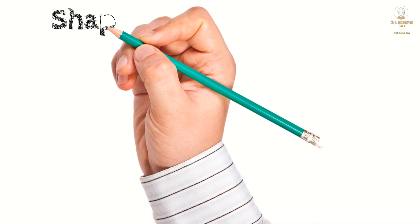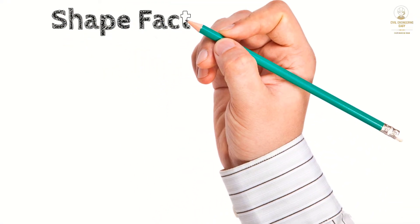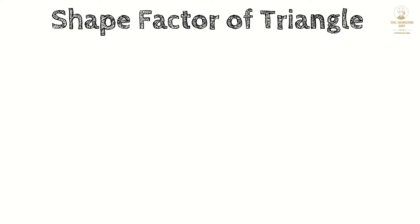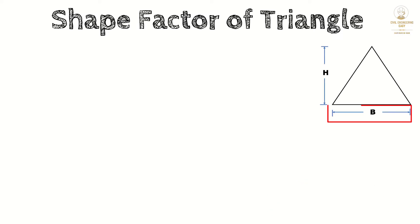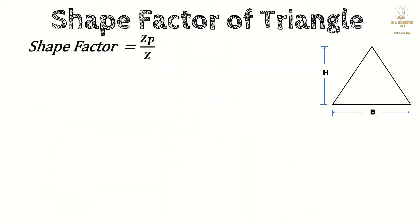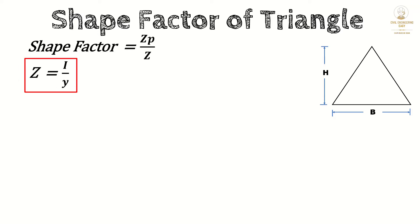Hi, welcome back. Today we are going to find out the shape factor of a triangular section. Consider a triangle having breadth b and height h. As we know, the shape factor is the ratio of plastic modulus to elastic modulus. Let's first calculate the elastic modulus, which is equal to the ratio of the moment of inertia of the section to the distance y.